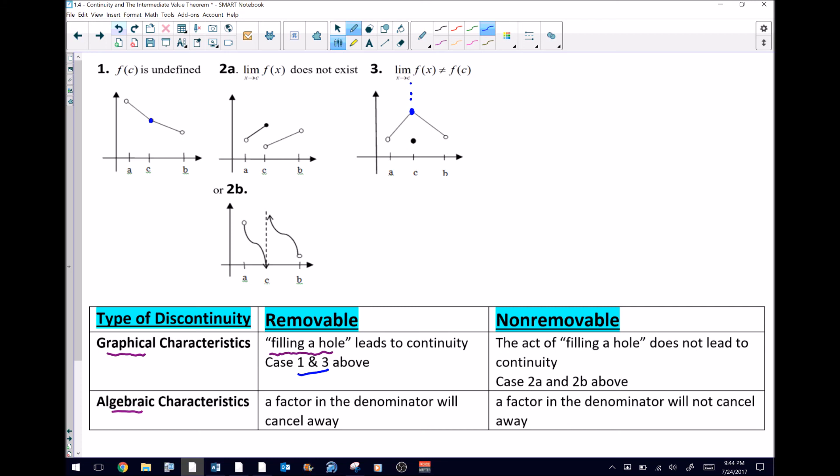Now a non-removable is just the opposite. If you fill in that hole, the function does not become continuous. You can see in the case of 2a, the filling in of that hole is not going to connect the two different pieces, and there's really no hole to fill in for 2b.